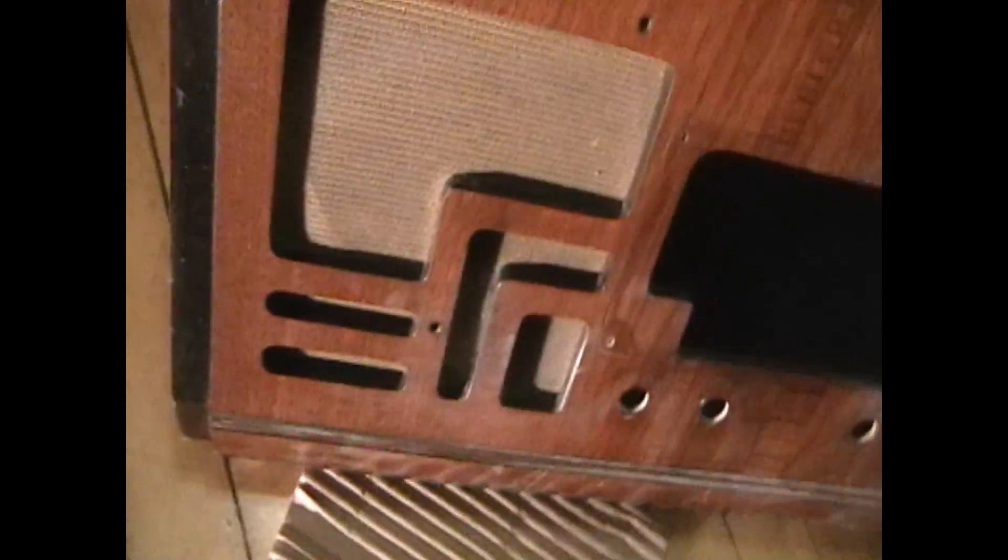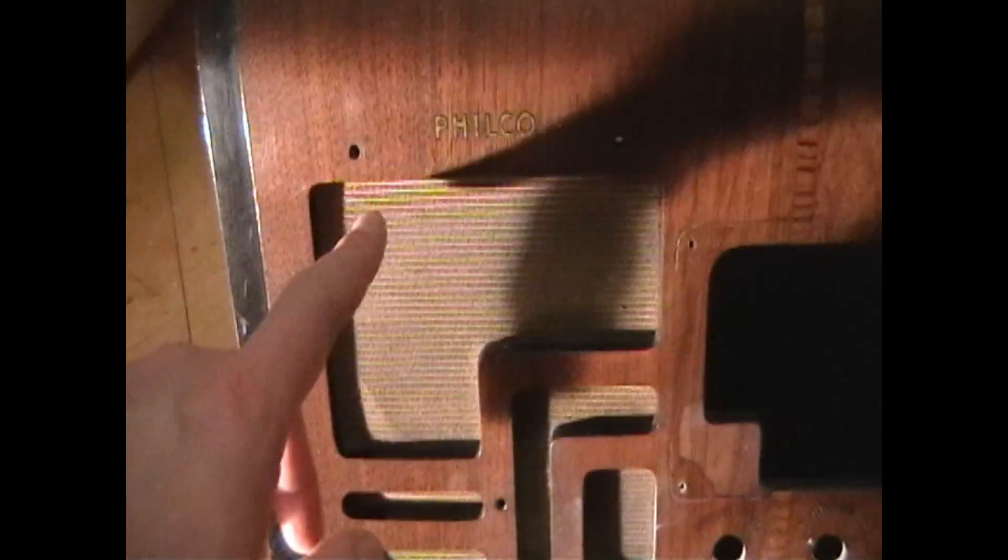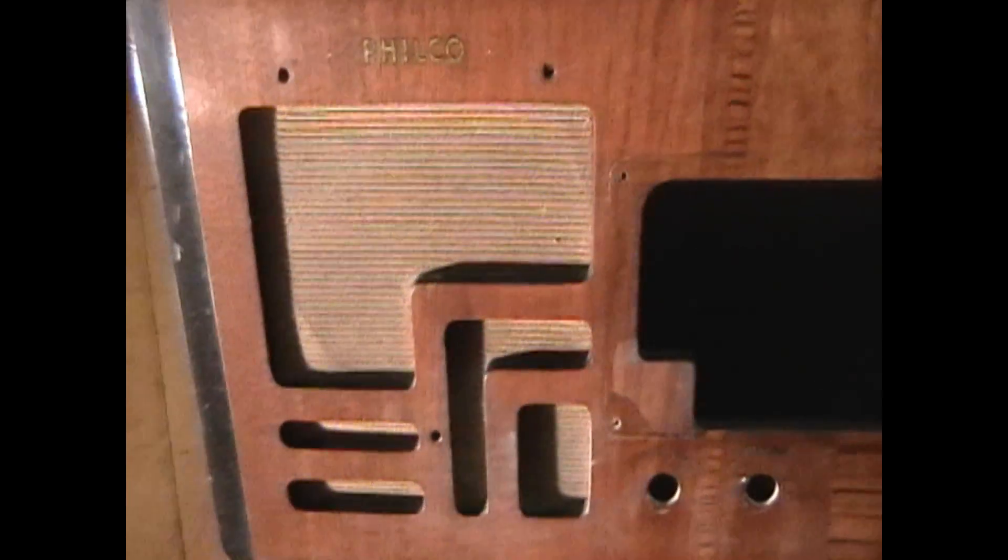Usually they use paint of some sort on these speaker grills on the Philcos from the late 30s, and quite often this chips off. One odd thing I've never encountered before is how the speaker grill is attached. Normally it's held on by the same screws that hold the speaker on here, here, and here. This one, it's actually stapled to the cabinet, so that's going to be a little bit of a challenge to get out.